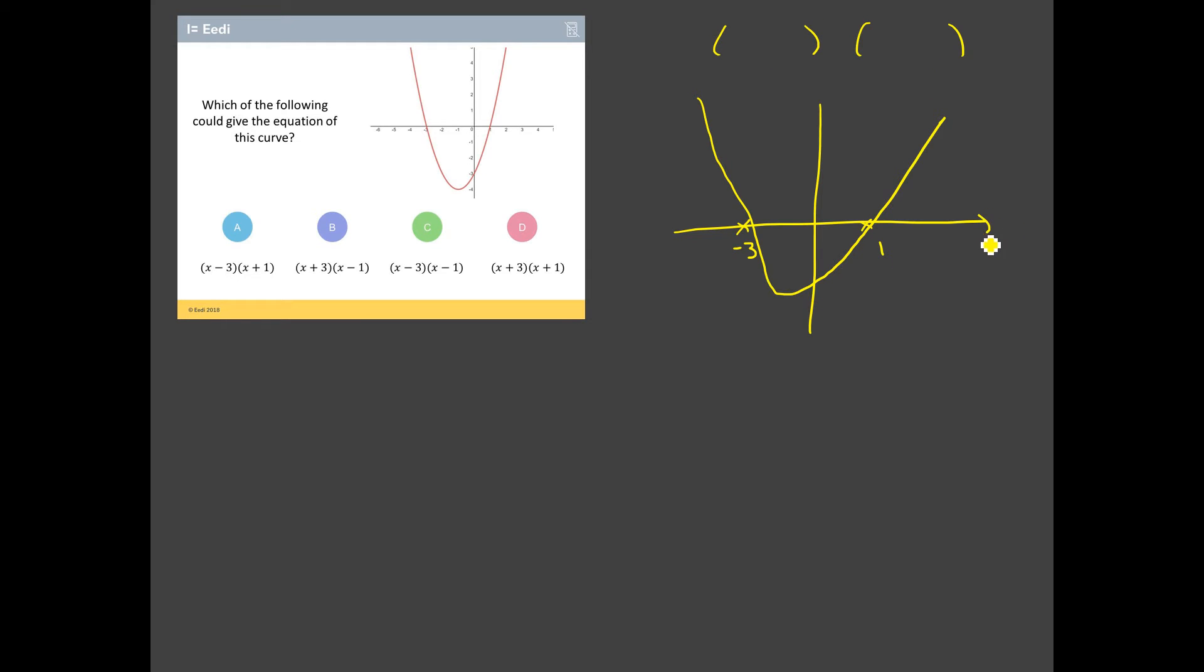Anytime we get equations that are factorized, like ours are here, what we really need to know is where do they cross the x-axis? So I'm going to start looking at these points here. Let's start with this one here. x equals one. What do we know about that, its location on this curve? Well, it's on the x-axis. So we know that when x is equal to one, y is equal to zero.